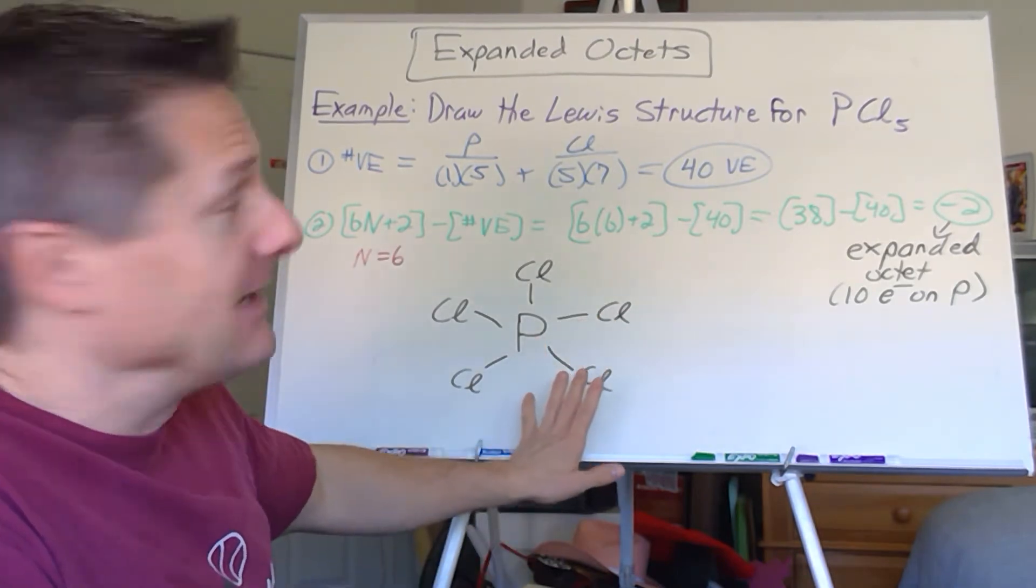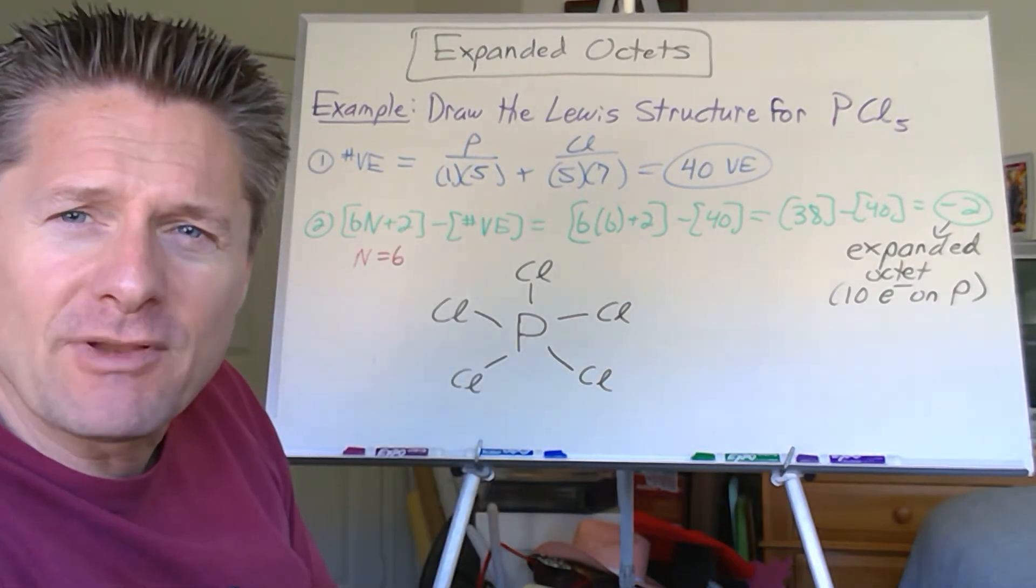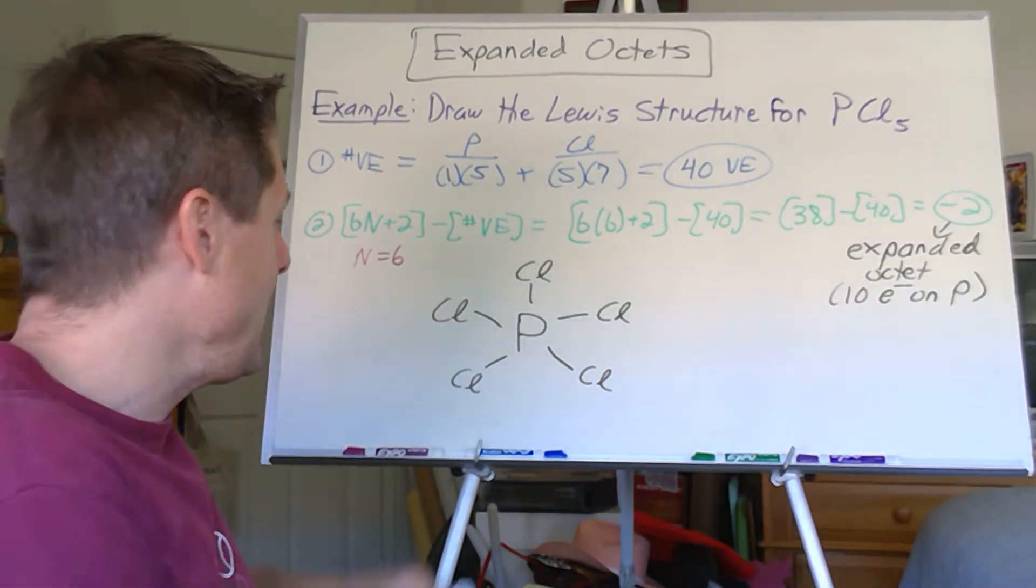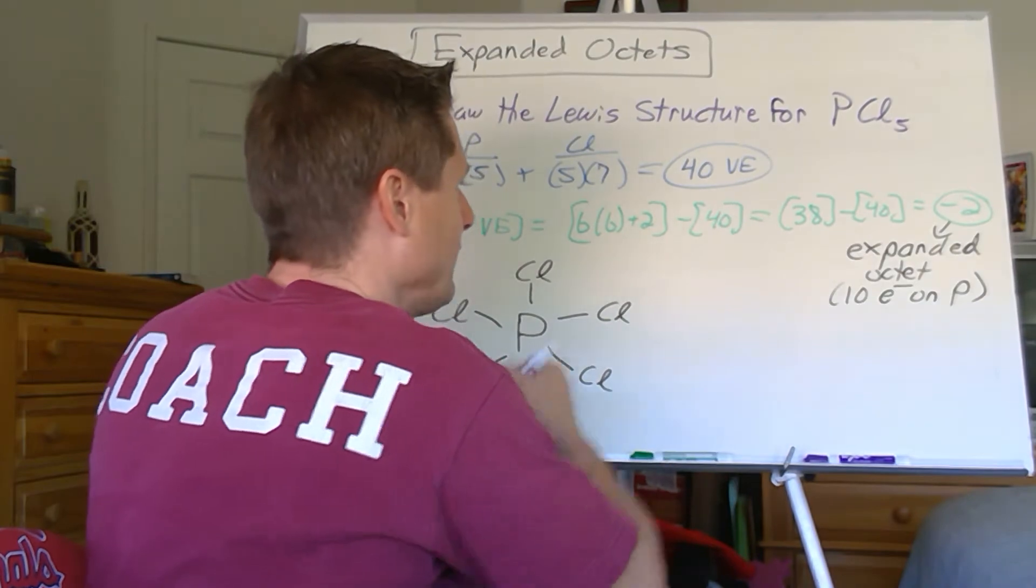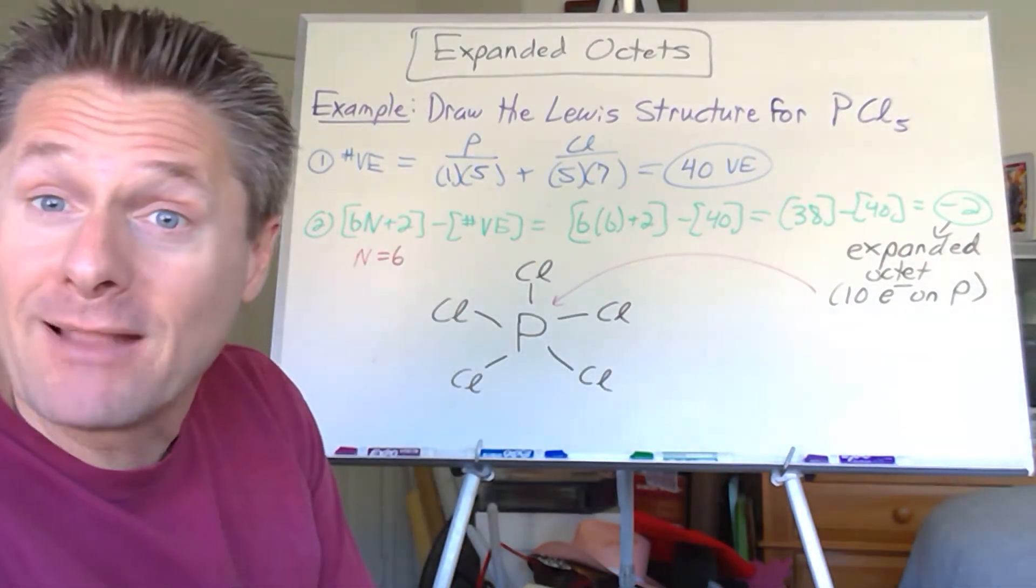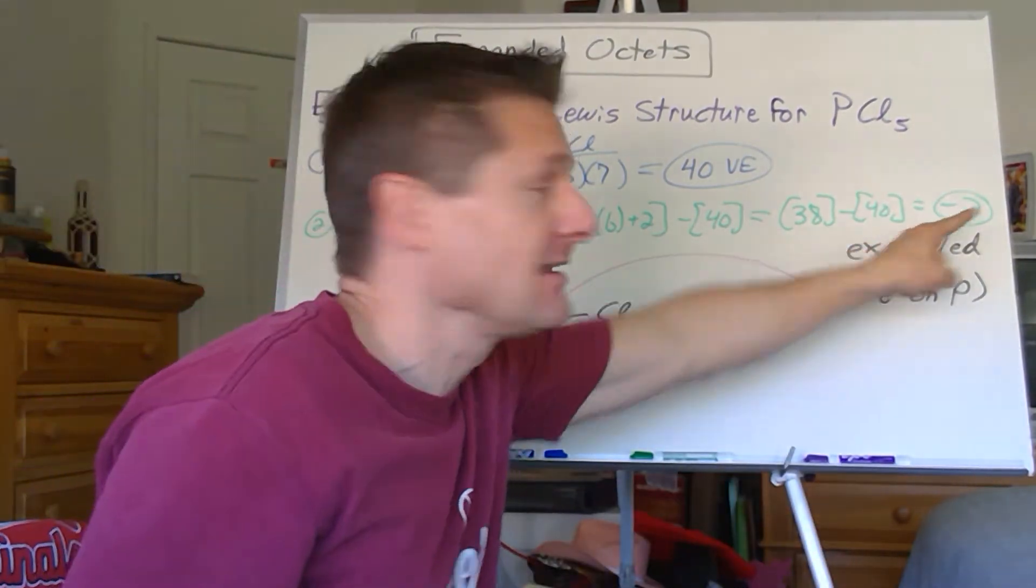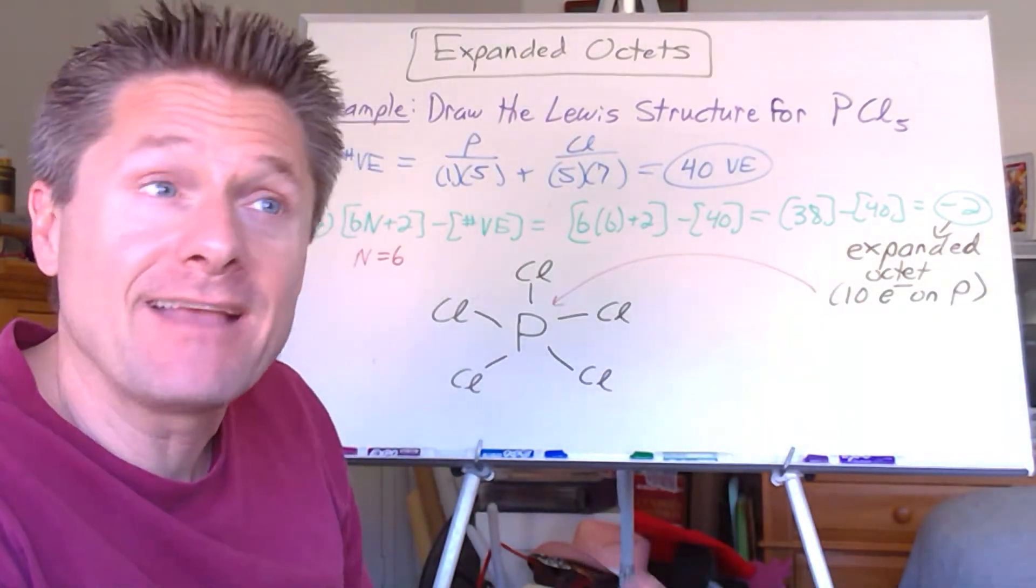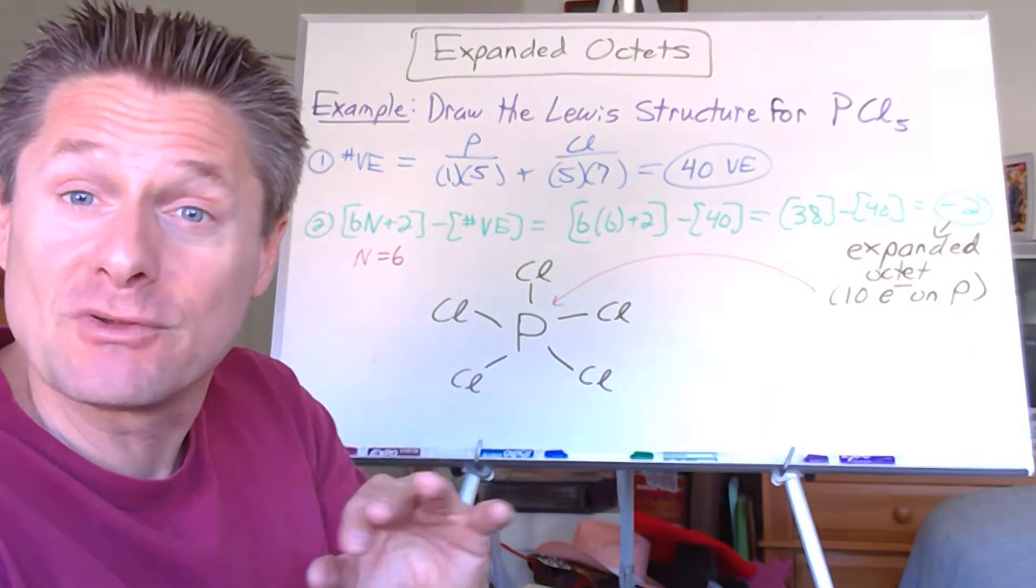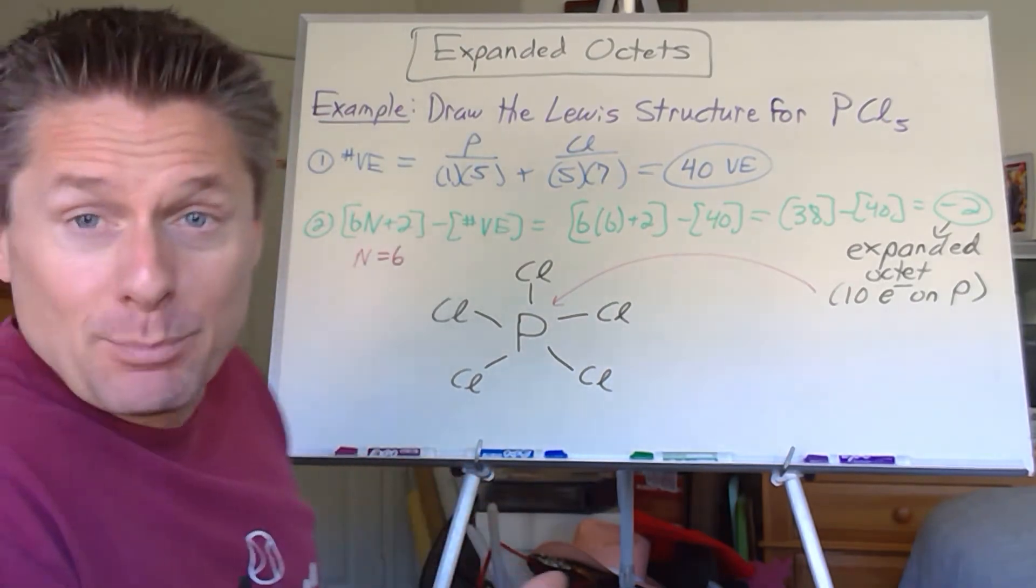Now, we know there's no multiple bonds in here because that would have given us a positive value. So we have one, two, three, four, five bonds to the phosphorus. Well, we need those 10 electrons to accommodate the five bonds because each single bond is two electrons. So if something has five bonds to it, it has to be an expanded octet. If something gets six bonds to it, like SF6, obviously you're going to need 12 electrons on there to accommodate the six bonds. Six times two is 12. Do you see that? So it seems intuitively obvious that this must be an expanded octet. Well, let's complete the octets now. Now we don't have, we got our 10 electrons on the phosphorus. The phosphorus is done.